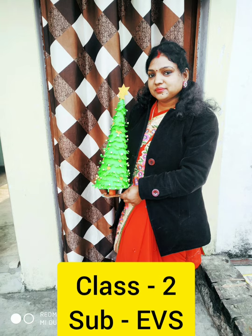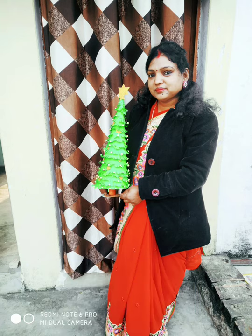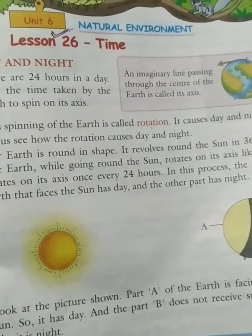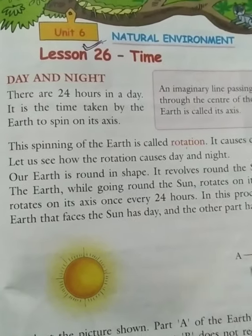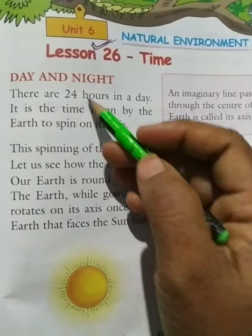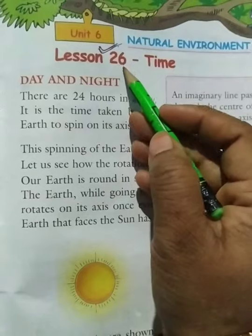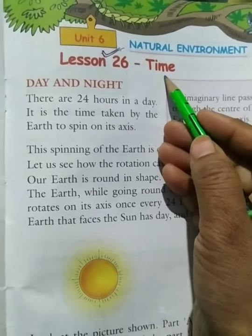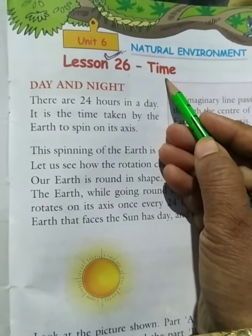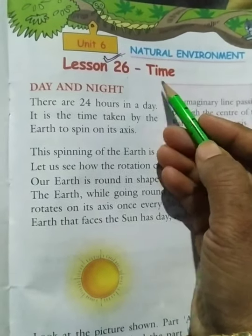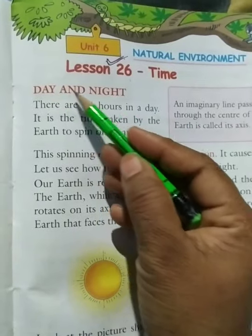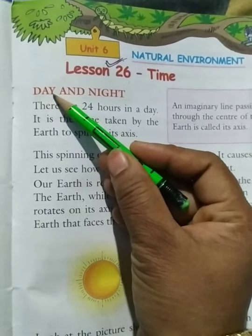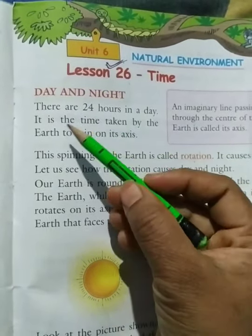Let's get started. Students, look at the book. Lesson 26. Chapter name: Time. Time means summer. Day and night. Day and night means din or raat.